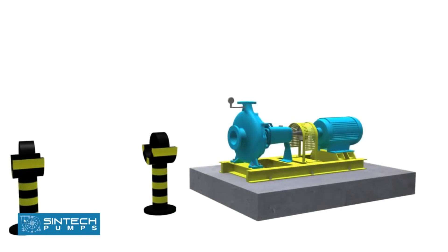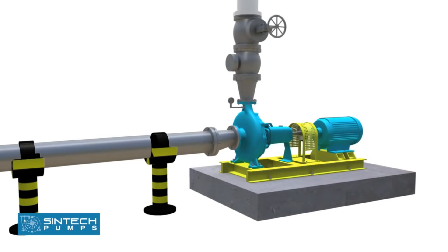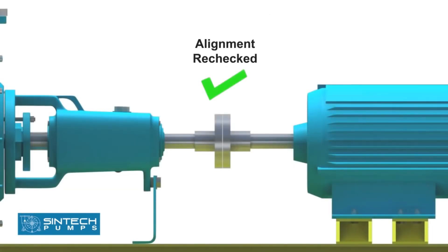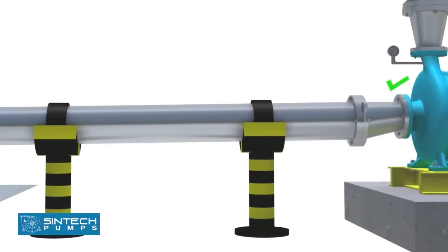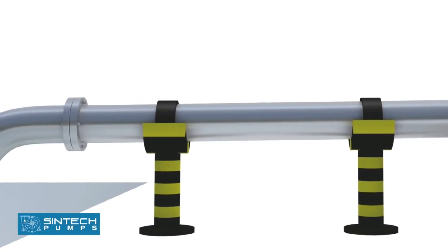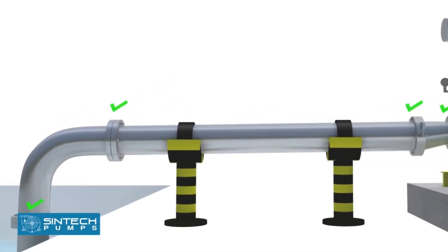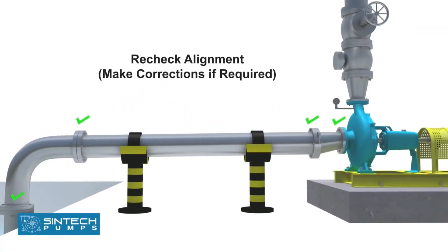After the alignment is completed, the piping associated with the pump should be bolted. Once this is completed, the alignment should be rechecked and similar readings should be obtained. If this is not the case, then the piping should be investigated and suitable corrections should be made. If this is left unattended, it can cause stress on the pump casing.